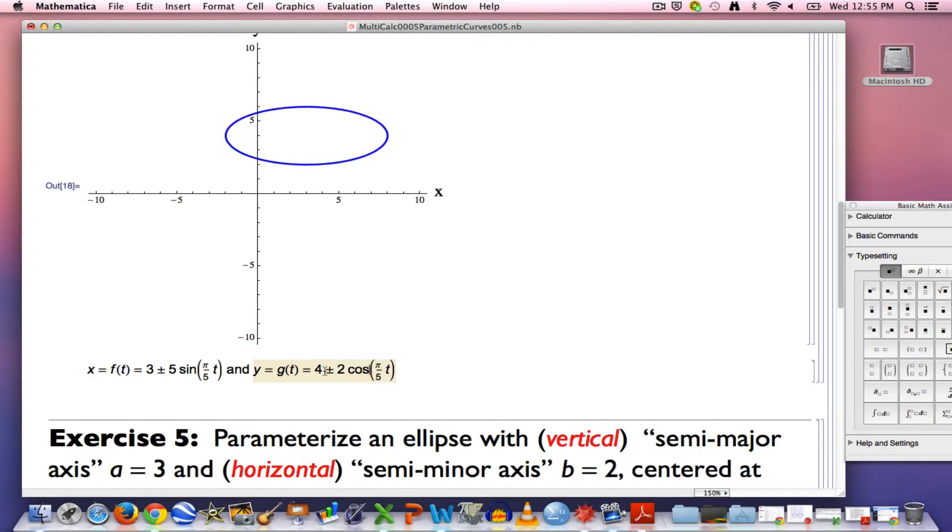Moreover, since y is starting at its minimum value, I want to use a minus sign here. y is starting at its minimum value and it's going to go up initially. x is starting at its average value but it initially goes down since we're going clockwise here. In order to make this function initially decrease, I need a minus sign here as well. This should be a parametrization for this ellipse. Now we check it.